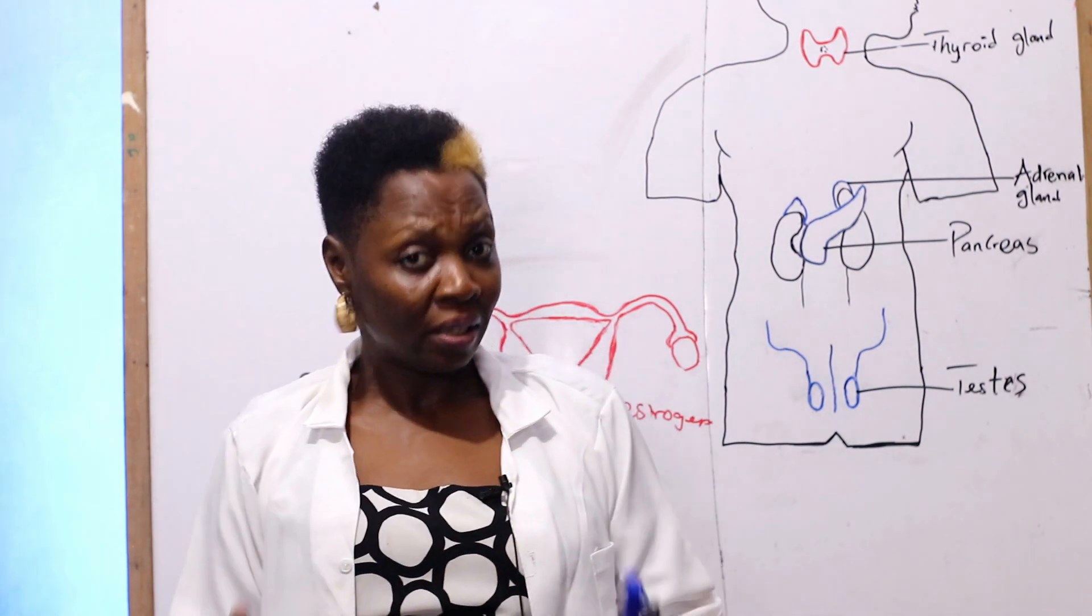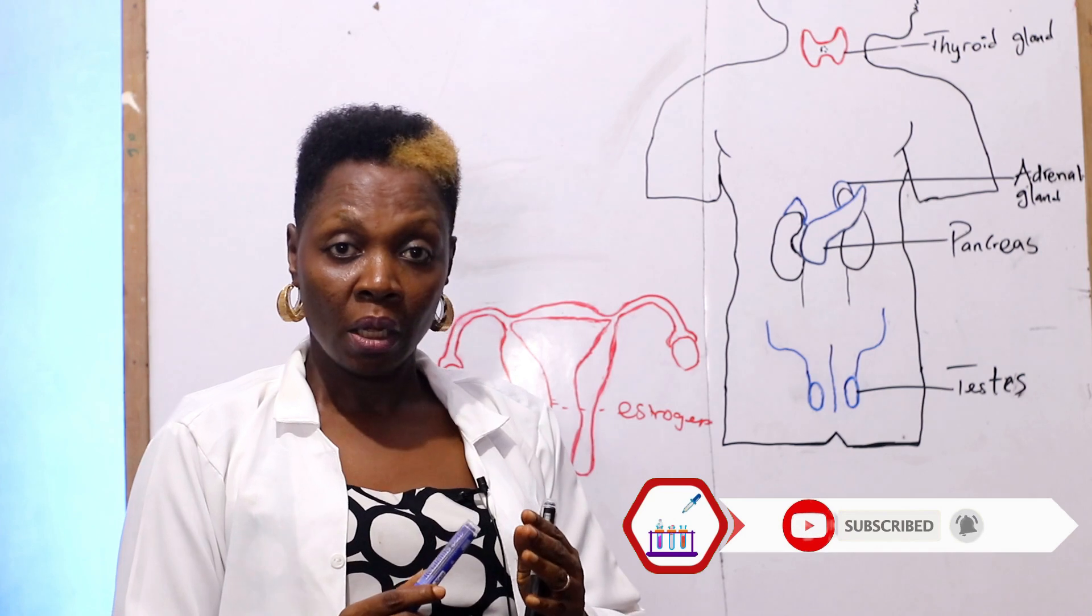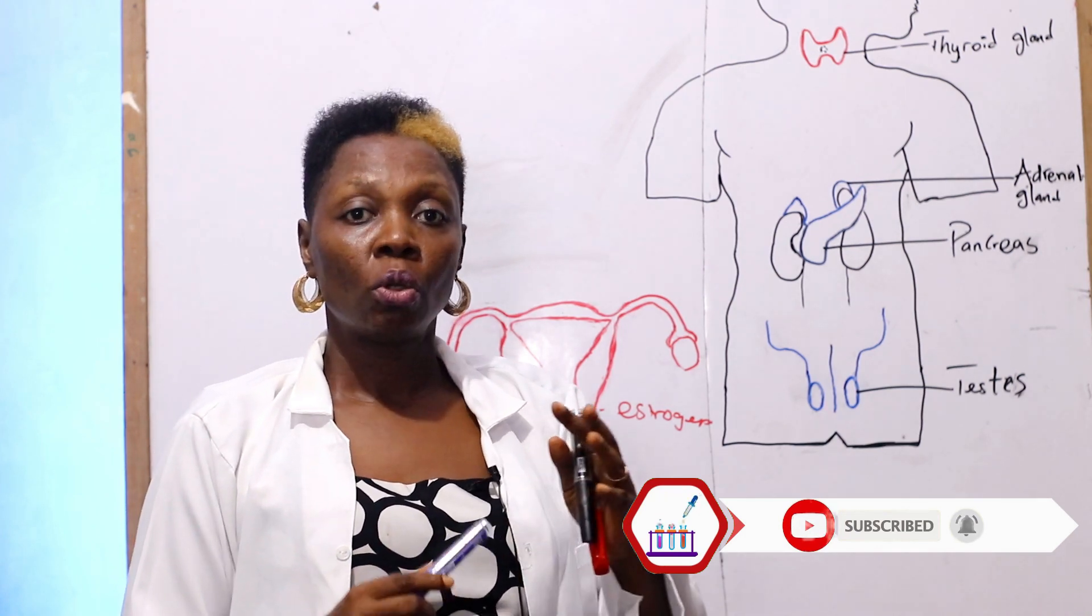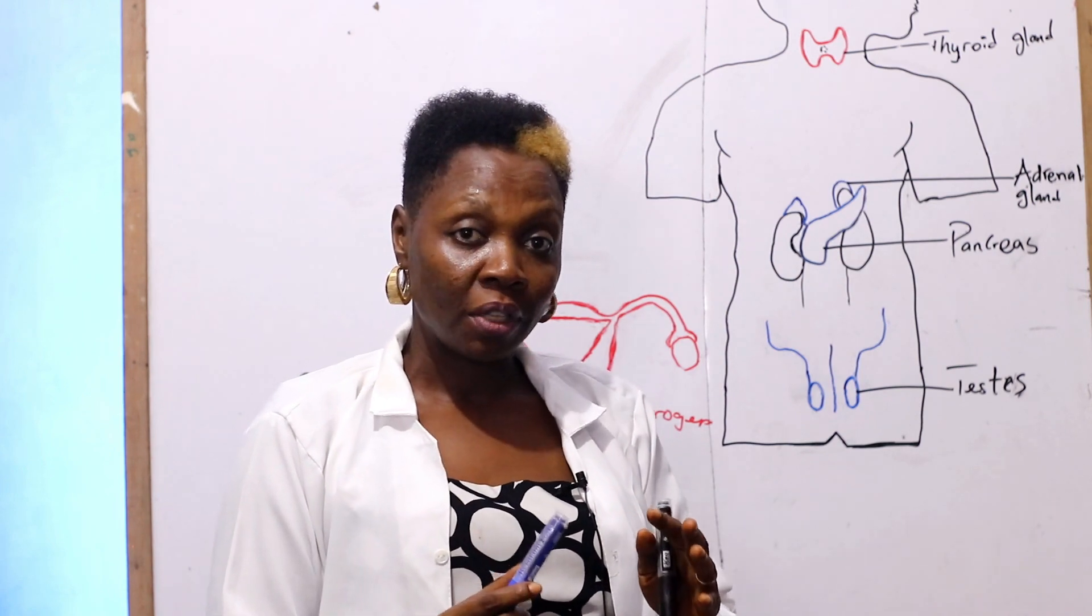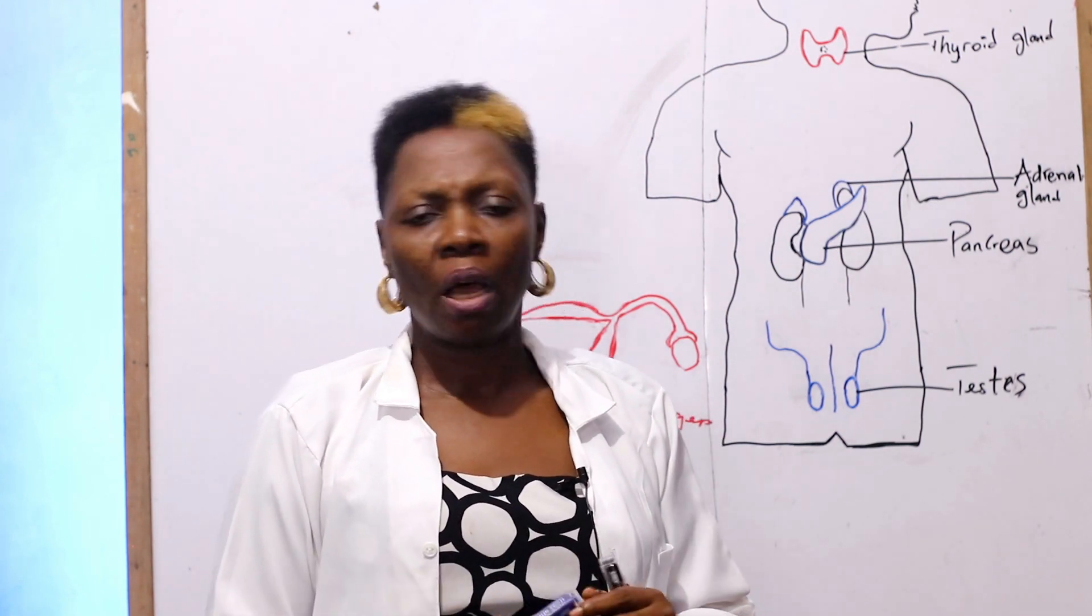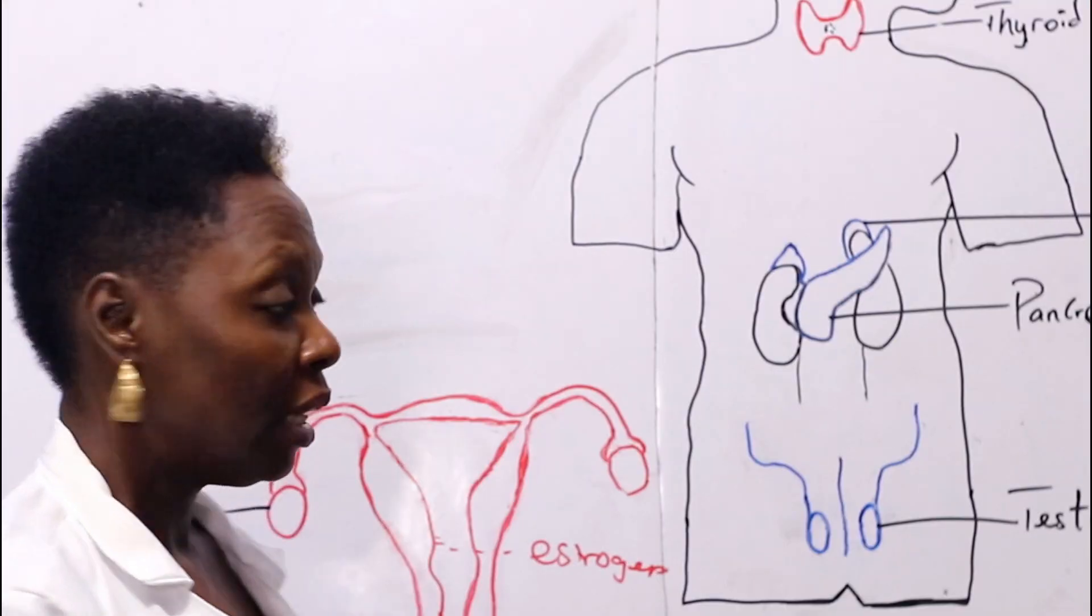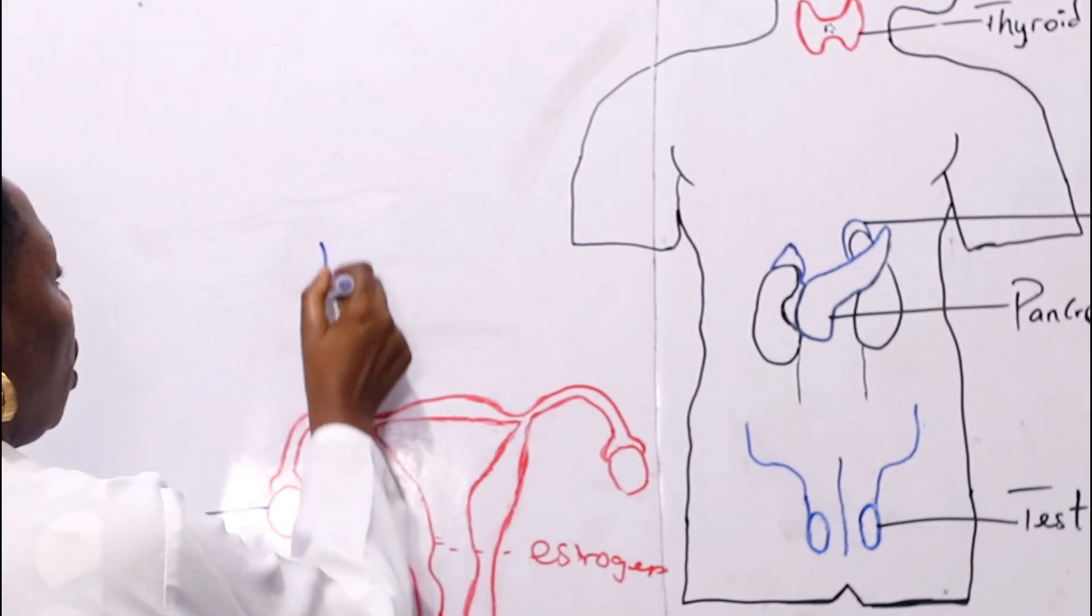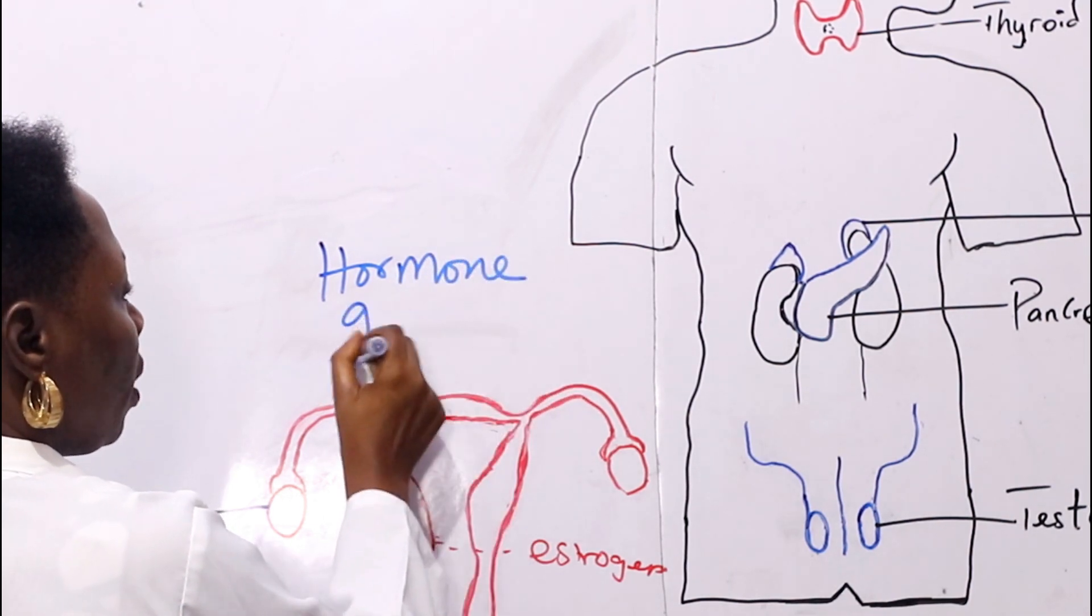The endocrine system or the hormonal system is made up of a combination of cells that work together to synthesize and secrete a biochemical substance called hormones. Before we go on, there are some key words we are going to be looking at in the course of this section: the word hormone and the word gland.